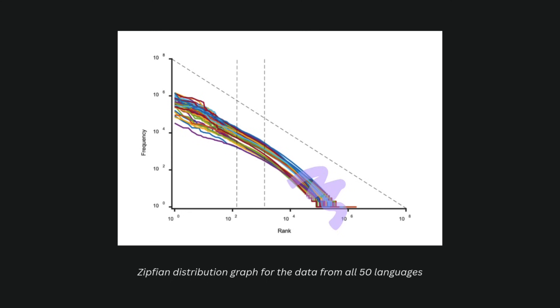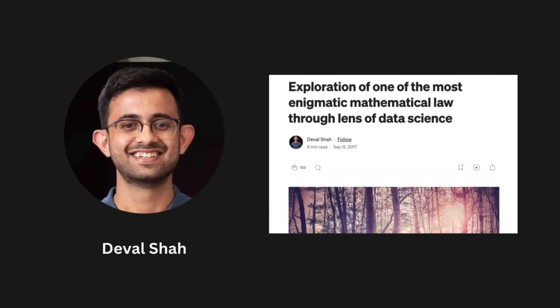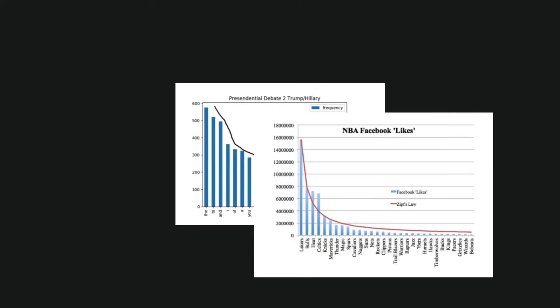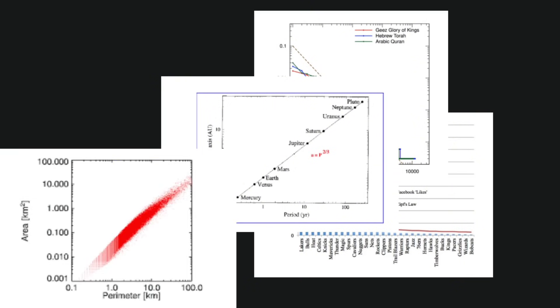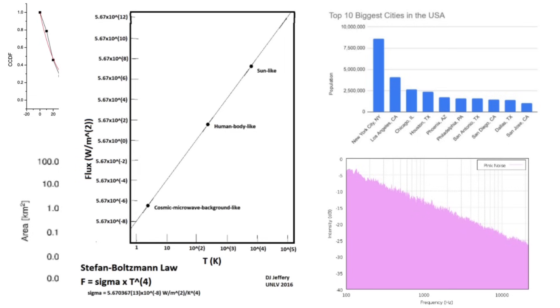Additionally, Zipf's law applies even to fields beyond corpus linguistics. Machine learning engineer Deval Shah writes about a Python script he wrote to run through random text corpuses on the internet and check for the pattern. Among other things — like the second debate between two presidential candidates — he links a photo showing how Zipf's law even holds for the number of Facebook likes given to each NBA team ranked in order of popularity. But this should come as no surprise when the law holds for ancient languages, Kepler's third law, the size of cloud areas viewed from space, the diameters of dust devils on Mars, the frequency spectrum for pink noise, city populations, the Stefan-Boltzmann law, and so much more. And the crazy part? Nobody truly knows why this happens.